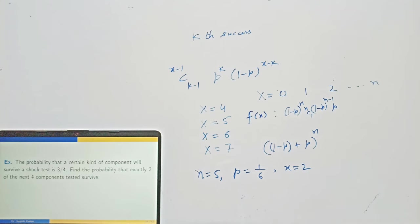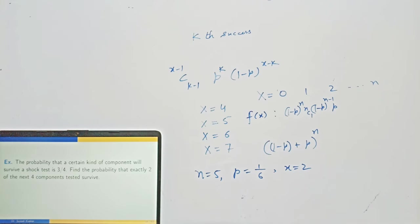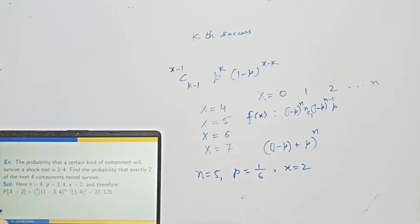Next example: The probability that a certain kind of component will survive a shock test is 3/4. What is the probability that exactly two of the next four components tested survive? Here n = 4 and x = 2. Use the binomial distribution formula to get the required probability.